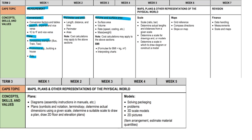Perimeter and area — perimeter is like the fence around your farm; area is the actual land it occupies, all the crops and everything on your farm. That's basically it.